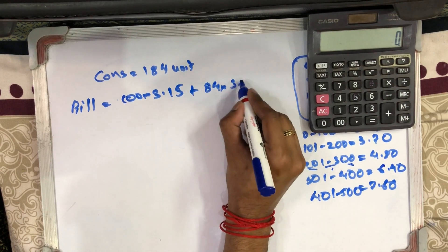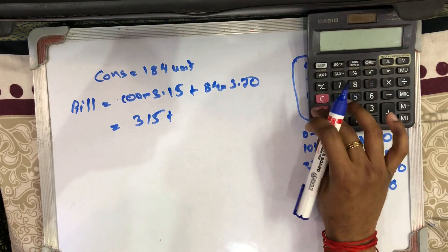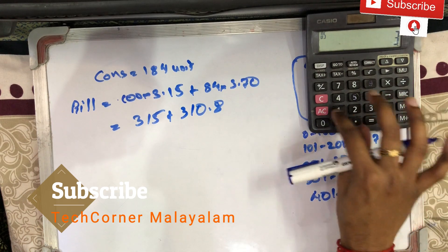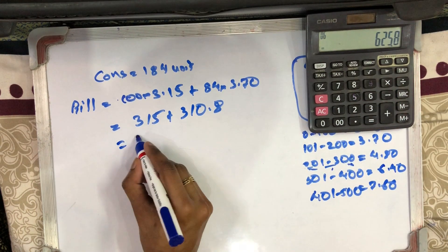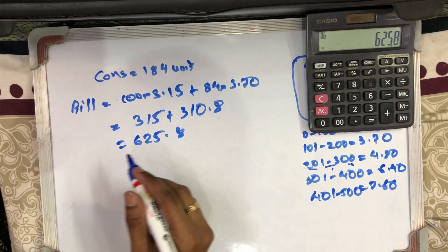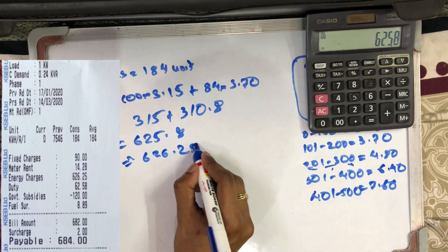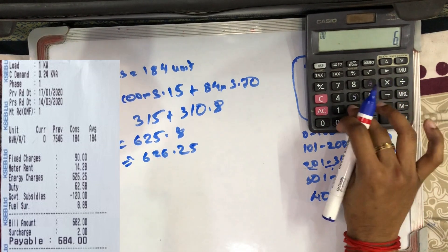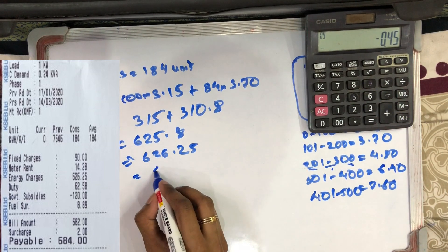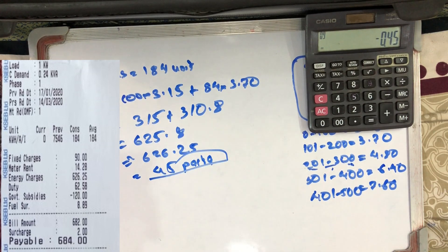That is 100. Now let's take a look. 315 plus 310.8. Here, it is 625.8. We have to take a look at the current energy charge — it is 625.8. Here it is minus. Here it is 45.8. Now, if you need to take a look below, it is 50 to 40.9.